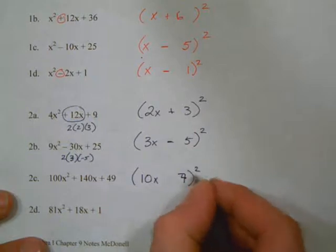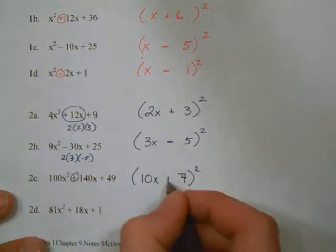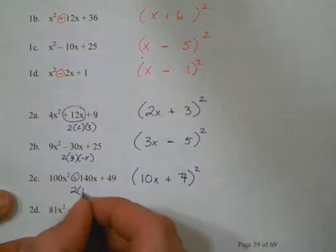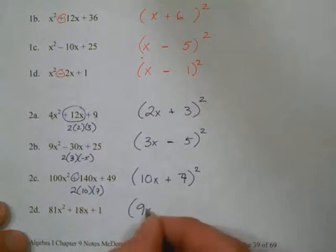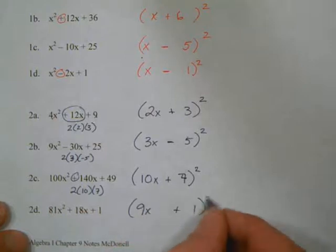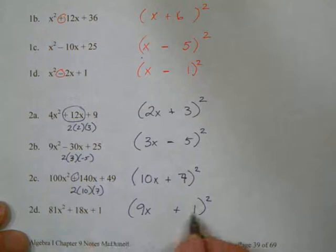Let's look at our next one. These are pretty quick. 100 is a perfect square, 49 is a perfect square. The middle is a plus, so that's a plus. 2 times 10 times 7 is 140. So that works.